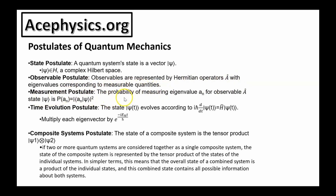The measurement postulate: the probability of measuring an eigenvalue a_n for an observable A is given by the inner product of the vector a_n with a state vector psi, absolute value squared. The time evolution postulate: the state psi of t evolves according to the Schrödinger equation. To get the time evolution, you multiply each eigenvector by the phase factor e to the minus i E_n t over h-bar. We won't need the composite system postulate for the neutrino oscillation problem.